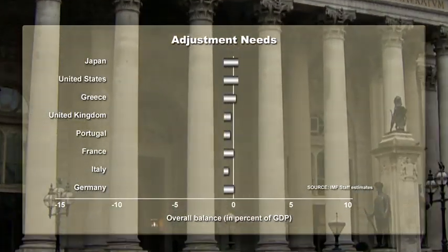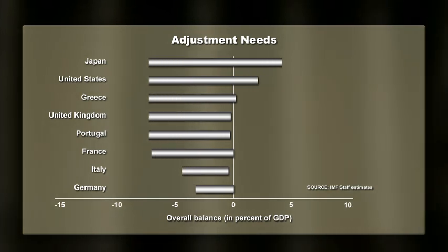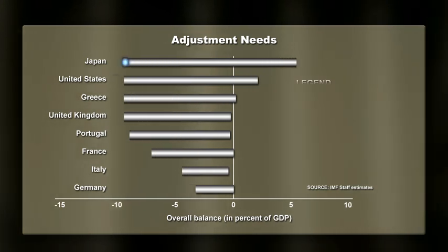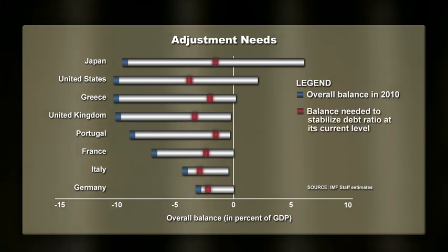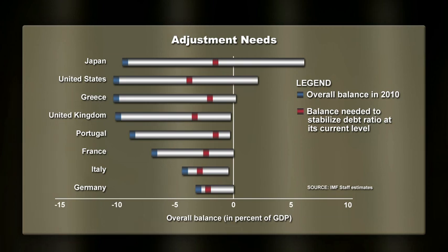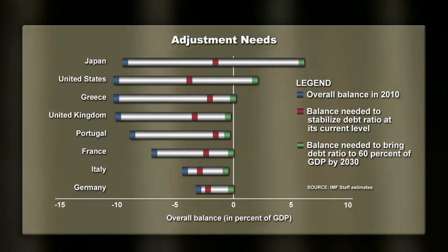This chart illustrates the adjustment needed in advanced economies in terms of deficit reduction. The first data point illustrates the fiscal balance today. The second data point illustrates the balance needed to stabilise the debt to GDP ratio at its current level, while the final data point represents the balance required to reduce the debt to GDP ratio to 60% by 2030.